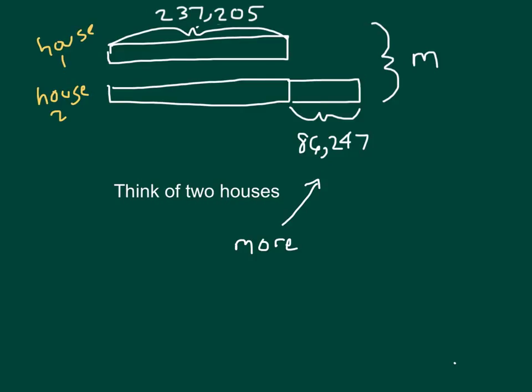So we have house one costs $237,205. House two costs $86,247 more than house one. But what we're really solving for is this M here. And when we do this here for house one and house two, that means we would be adding the cost of house one and of house two. Could you write out a problem based on what I've stated?